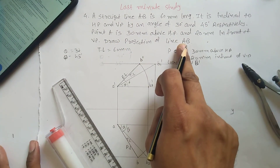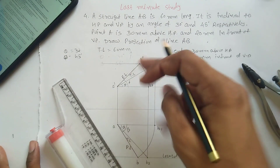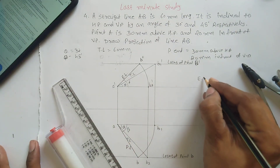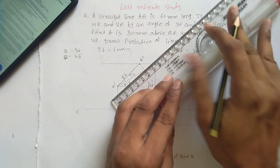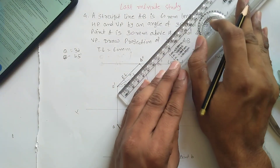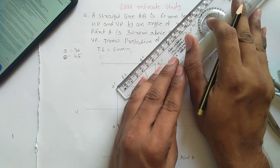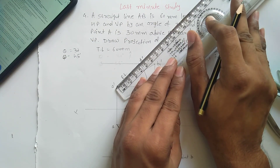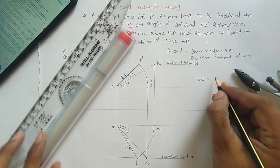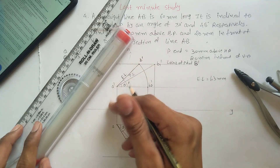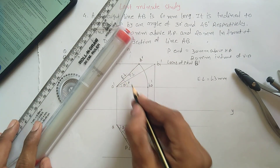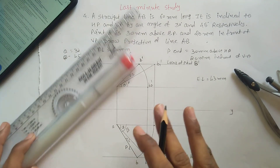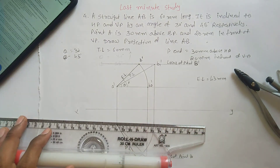They ask to draw the projection. If they ask to calculate the elevation length and plan length, write down the answer — the elevation length is approximately 43 mm. Similarly, measure the plan length, measure angle beta from this direction. This completes problem number 4 from sheet number 3.